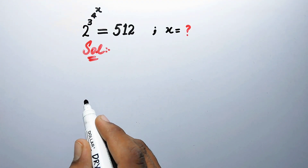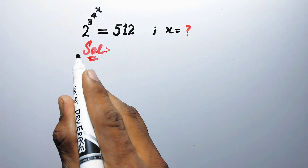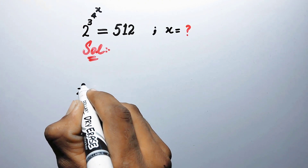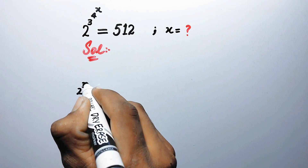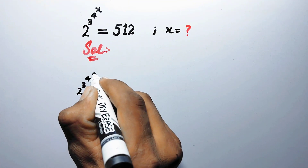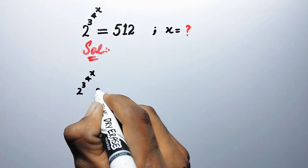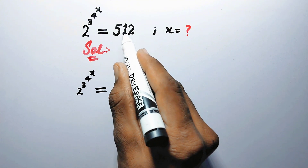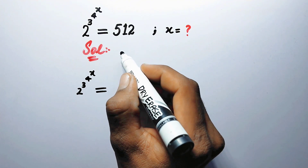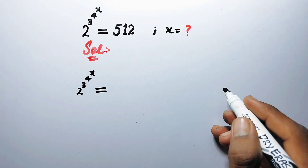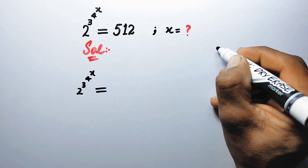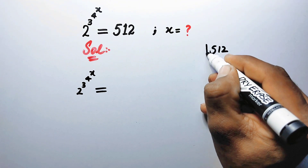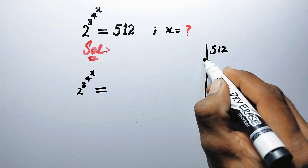In the first step we write the left hand side as 2 to the power 3 to the power 4 to the power x, and this is equal to — we will factorize 512 to write it in index form.